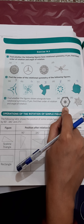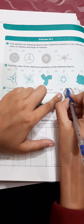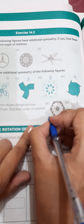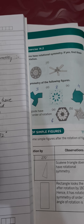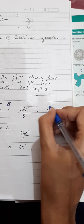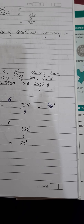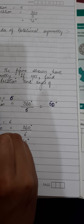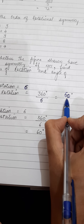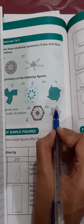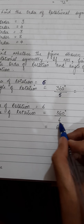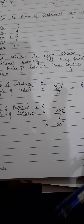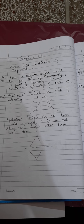Question three: you have to tell the angle of rotation and order of rotation. For the first figure, counting the sides gives six, so the order is six and the angle is 360 upon 6, which is 60 degrees. For part b, counting the spikes gives six, so the order of rotation is also six and the angle of rotation is 360 upon 6, which is 60 degrees. That completes exercise 14.2.